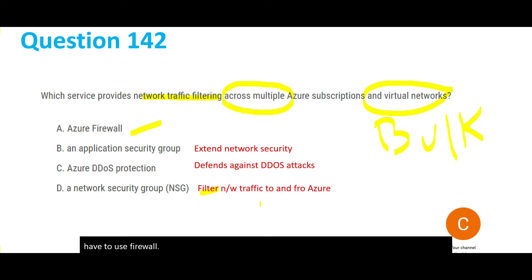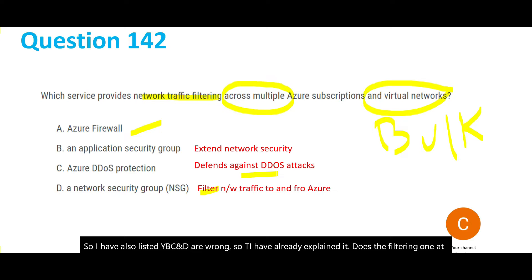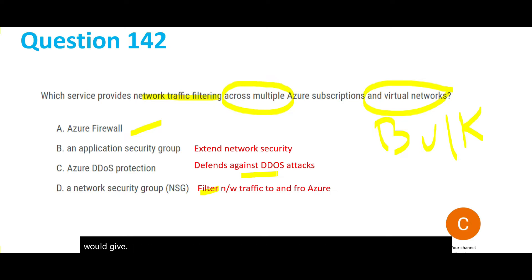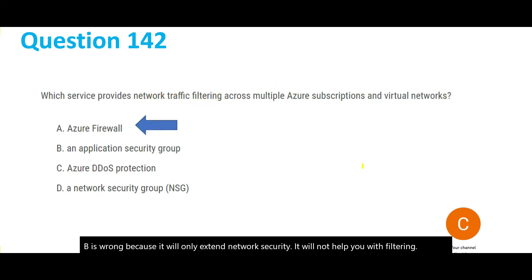I have also listed why B, C, and D are wrong. NSG does the filtering one at a time. DDoS defends against DDoS attacks — for example, someone spawns so many threads trying to access the same website, like Amazon.com, giving the perception that a million people logged in at once and depleting all resources. Option B is wrong because it will only extend network security; it will not help with filtering. Hence, firewall is the answer.